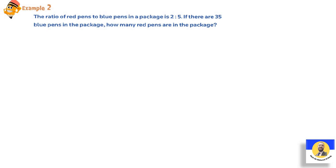Example 2: The ratio of red pens to blue pens in a package is 2:5. If there are 35 blue pens in the package, how many red pens are in the package? If we solve it using the normal method like we took in last year, we would write 2:5 for red to blue. Then write 35 here under blue. So how can we find this number? We ask 5 by what equals 35? 5 by 7 equals 35. So 2 by 7 equals 14. So there are 14 red pens.